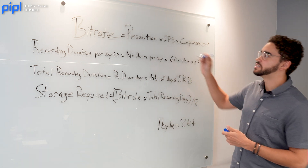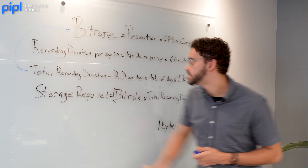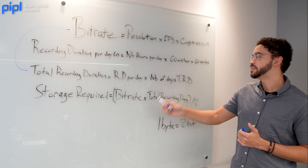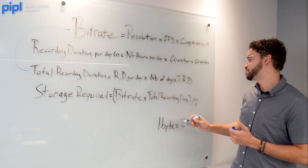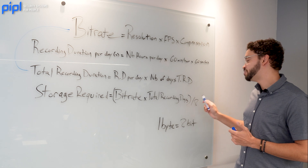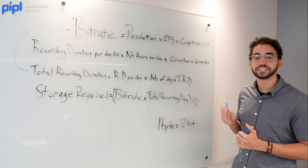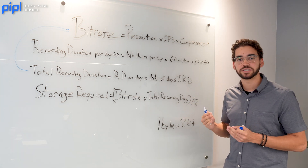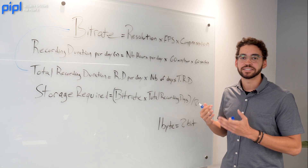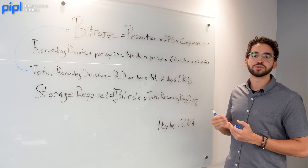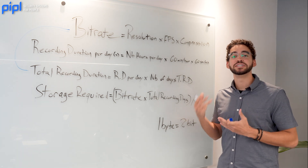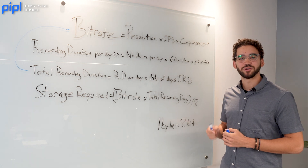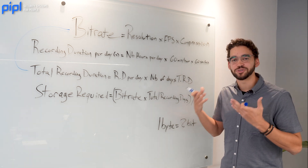You now have the two numbers needed to calculate the storage required: bitrate times total recording duration, then divide by 8. The reason for dividing by 8 is that 8 bits equal 1 byte, and when we talk about storage space we always talk in bytes — gigabytes, terabytes. Transferring bits to bytes makes it easier to calculate the storage space you'll need on your disk.